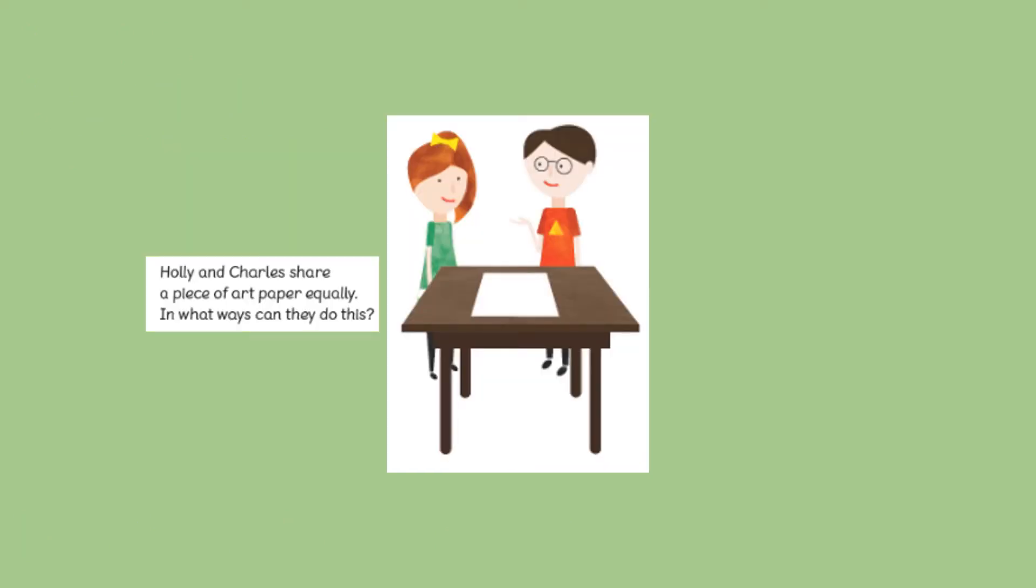So here you can see Holly and Charles and they're standing by a table and on the table is a piece of art paper which they want to share equally. In what ways can they do this? Now an important word in this is equally. That means they both must have exactly the same amount of paper each. So how can they do it? They don't want to tear it, they just want to fold it.